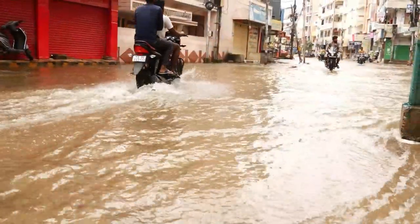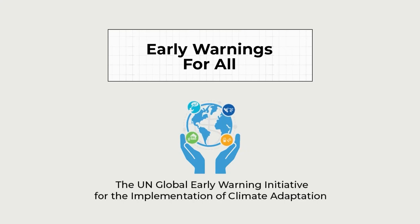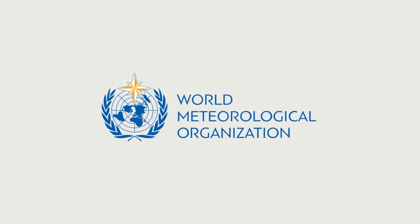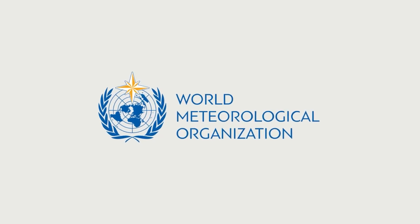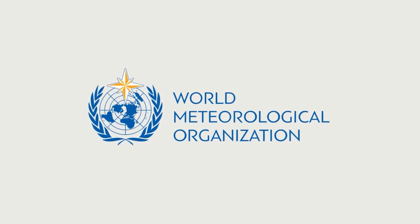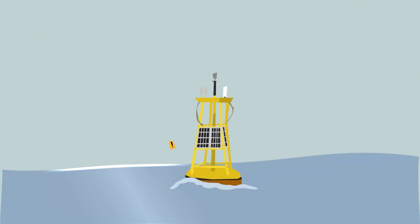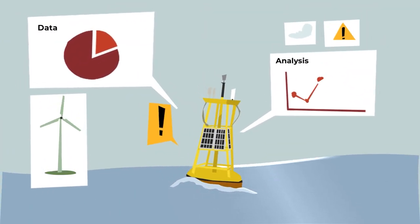To protect the most vulnerable communities, the UN Secretary-General is driving the Early Warnings for All initiative. As part of this, the World Meteorological Organization has completed a set of practical guidelines to help countries work together with donors to implement early warning systems for coastal inundation.